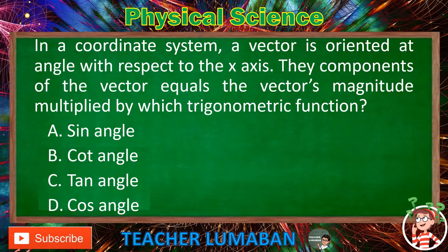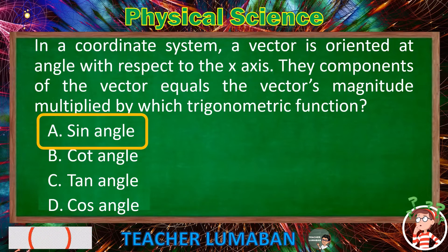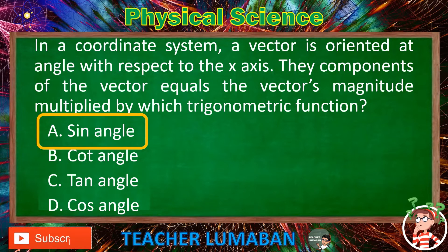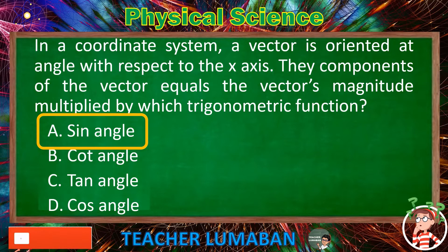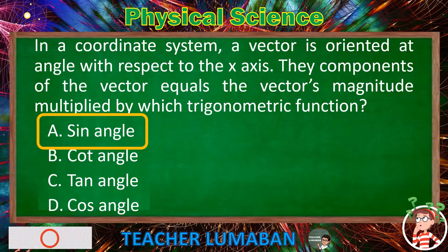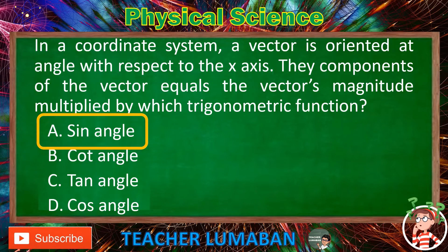The correct answer is letter A — sin θ. In a coordinate system, a vector oriented at an angle with respect to the x-axis has its components equal to the vector's magnitude multiplied by the trigonometric function sin θ.